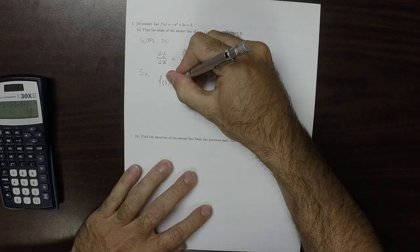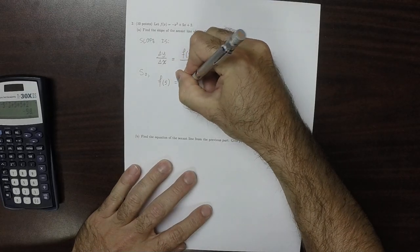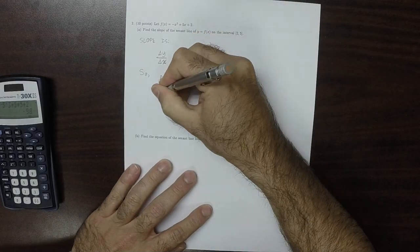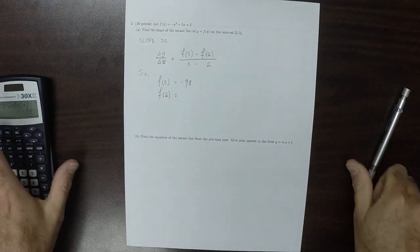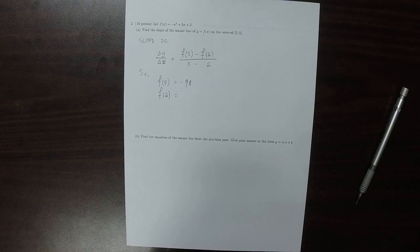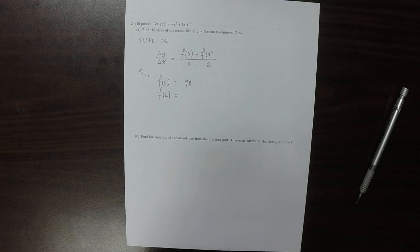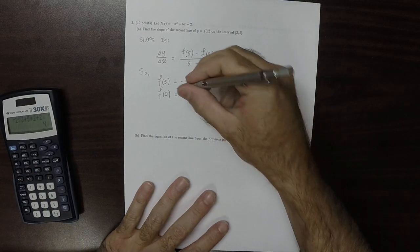f of 2, that's negative 9. f of 2 is negative 2 cubed plus 5 times 2 plus 2, so that'd be 4.